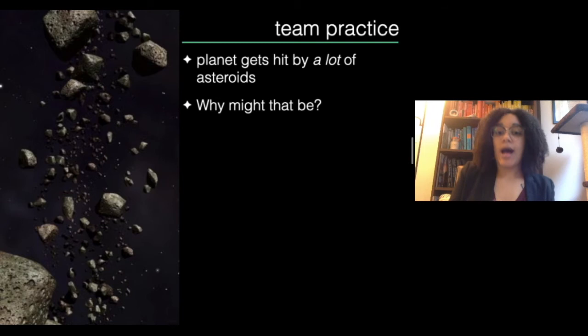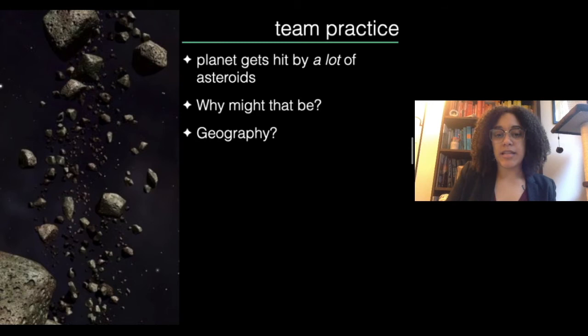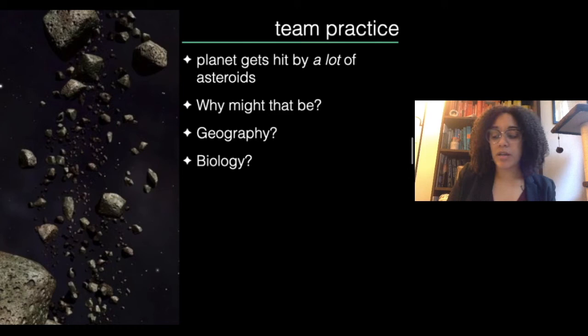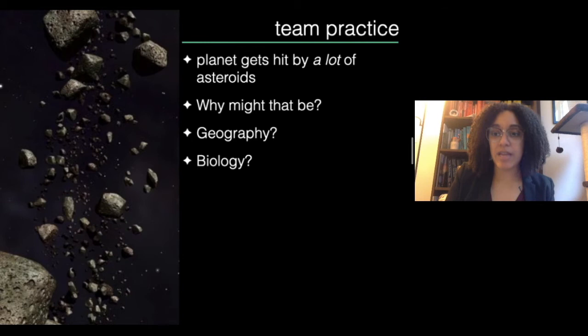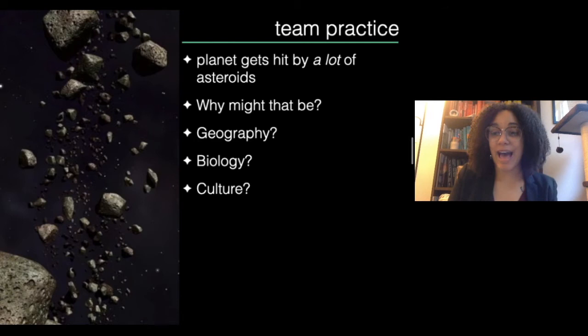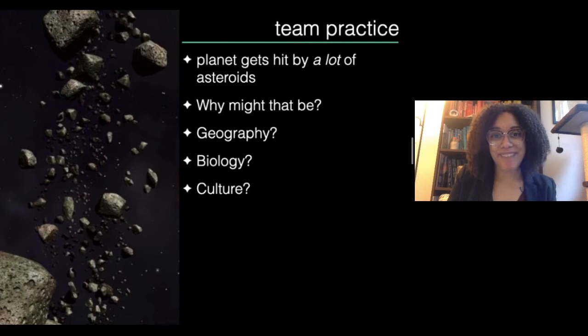Think about: why might that planet get hit by a bunch of asteroids? What might this do to the geography of the planet? How would it affect the climate — the weather patterns? What would the biology of life forms who form and evolve under these circumstances be like — what would they look like, what needs would they have, would they breathe, would they see, would they have the same senses as us? And finally, what's their culture like — where do they live, how do they treat each other, what do they value, what do they worship? Give yourself maybe five to ten minutes to answer these questions, then you'll come back and I'll tell you what my answers are. Pause now.